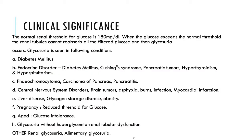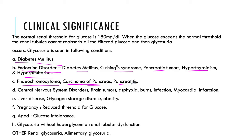What is the clinical significance? If glucose is present in urine, it can indicate the following conditions: diabetes mellitus, endocrine disorders — which can include Cushing's syndrome, pancreatic tumor, hyperthyroidism, hyperpituitarism — as well as pheochromocytoma, carcinoma of the pancreas, or pancreatitis, which means cell degeneration in the pancreas.